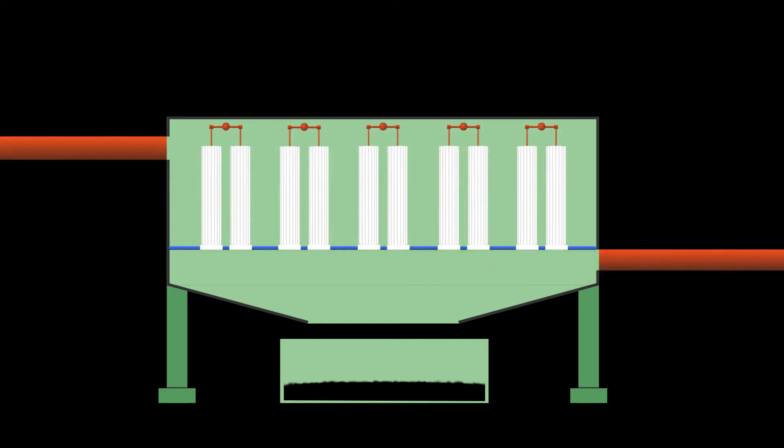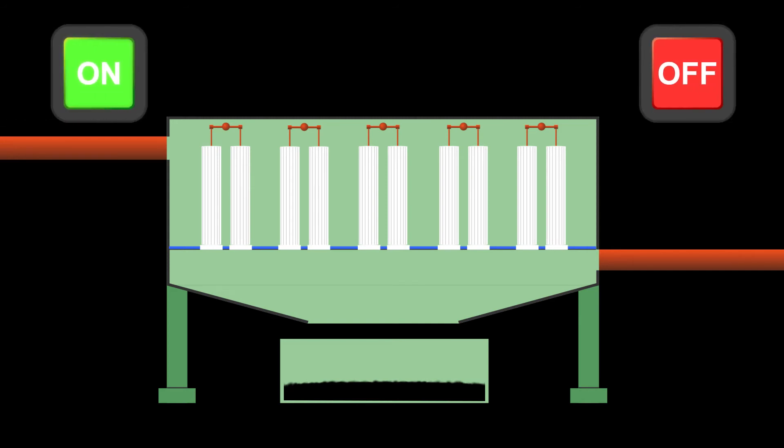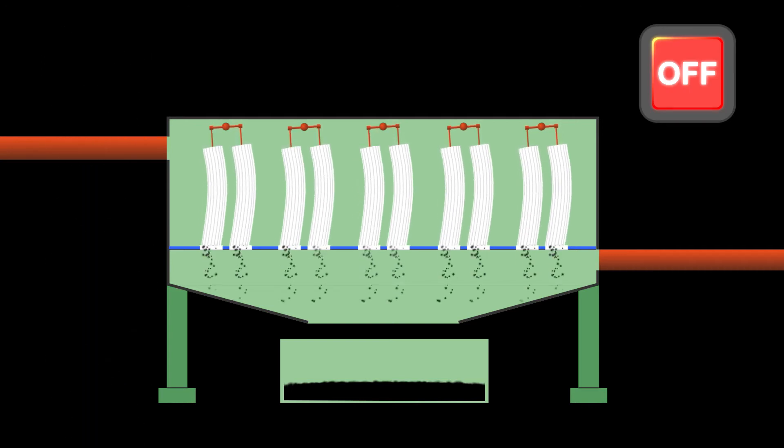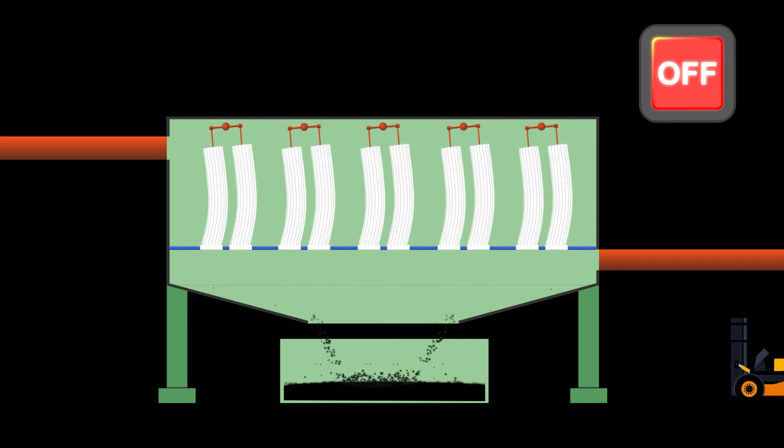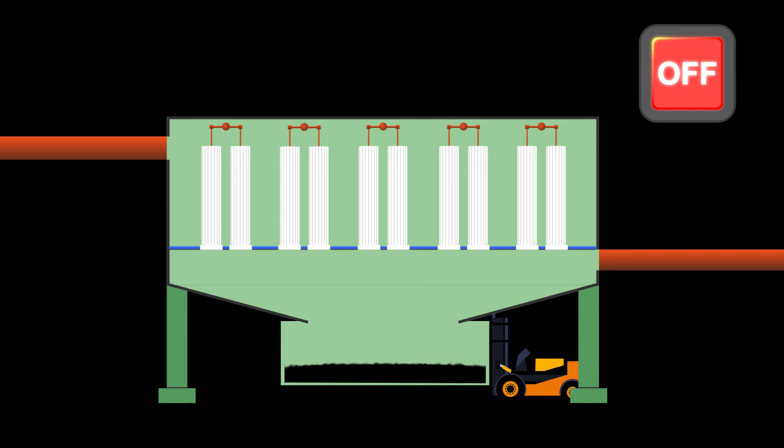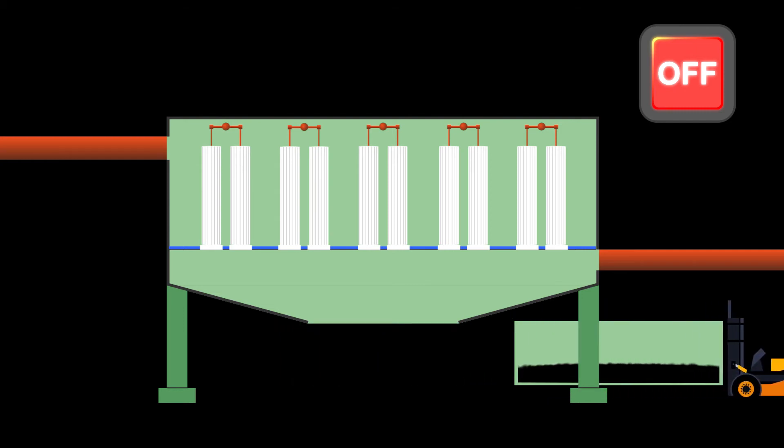To clean a shaker baghouse, which normally uses woven filter bags, the airflow through the system must be periodically shut down, also referred to as being taken offline, while mechanical shake cleaning is employed. After the dust cake is released from the bags, it falls into a hopper at the bottom of the baghouse for removal.